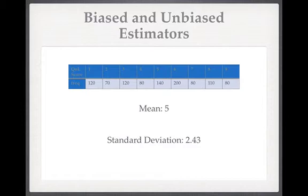The sample mean is an unbiased estimator: if you repeat sampling many times, the mean clusters around the population mean, so the statistic accurately estimates the parameter. However, standard deviation is a biased estimator — the standard deviation of the sample tends to underestimate the population standard deviation. There is an unbiased estimator for the population standard deviation, and it's called the sample standard deviation.